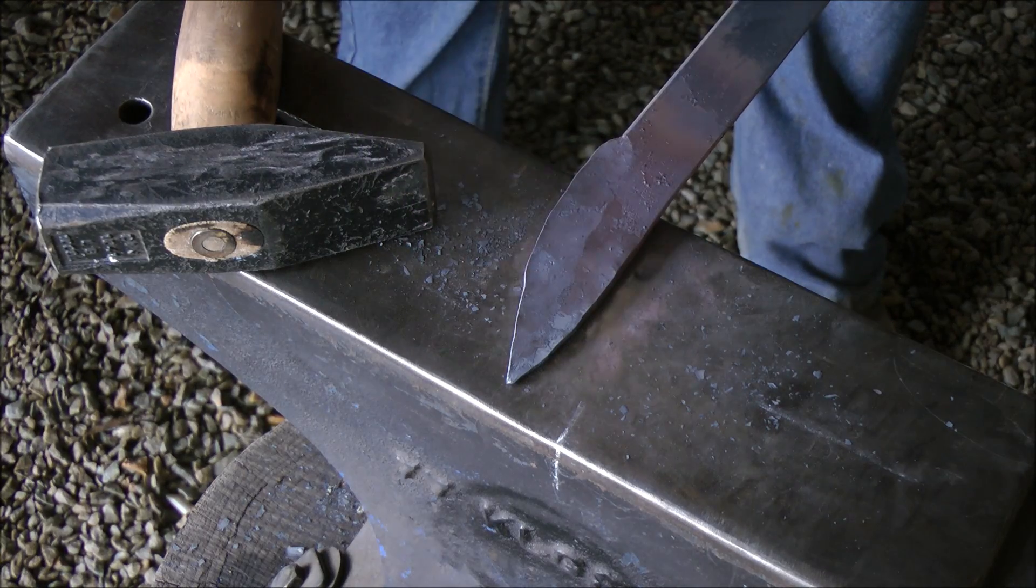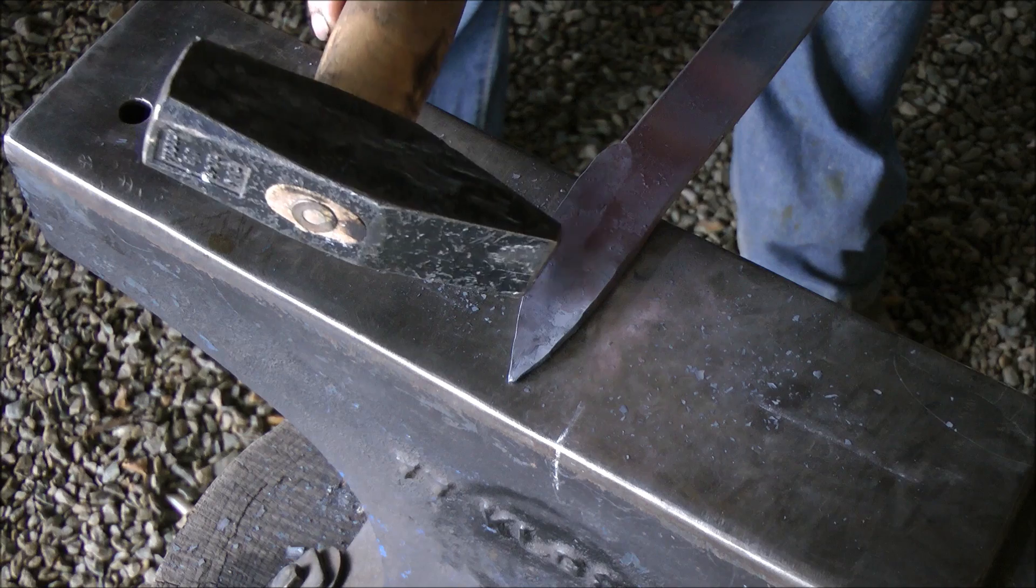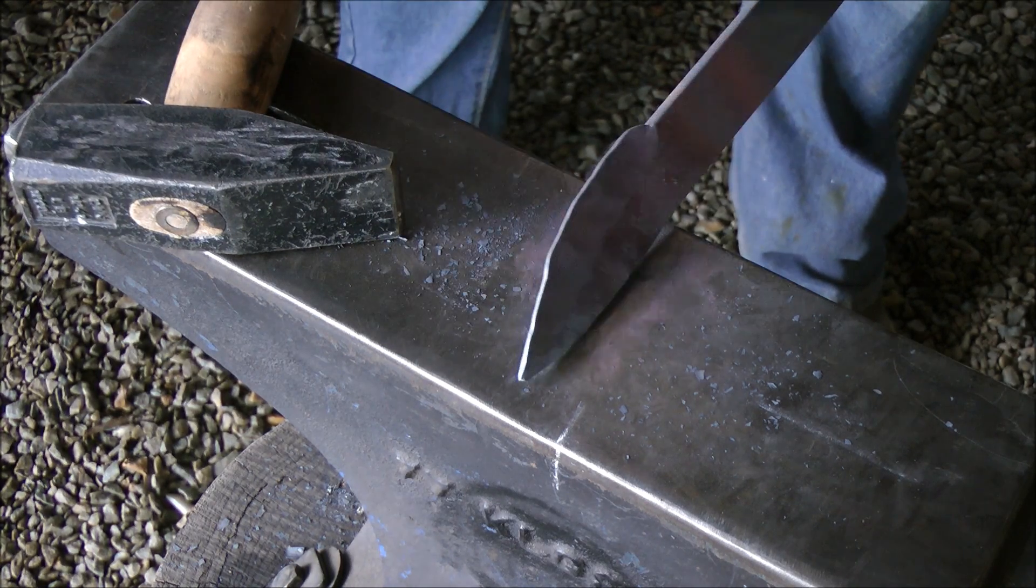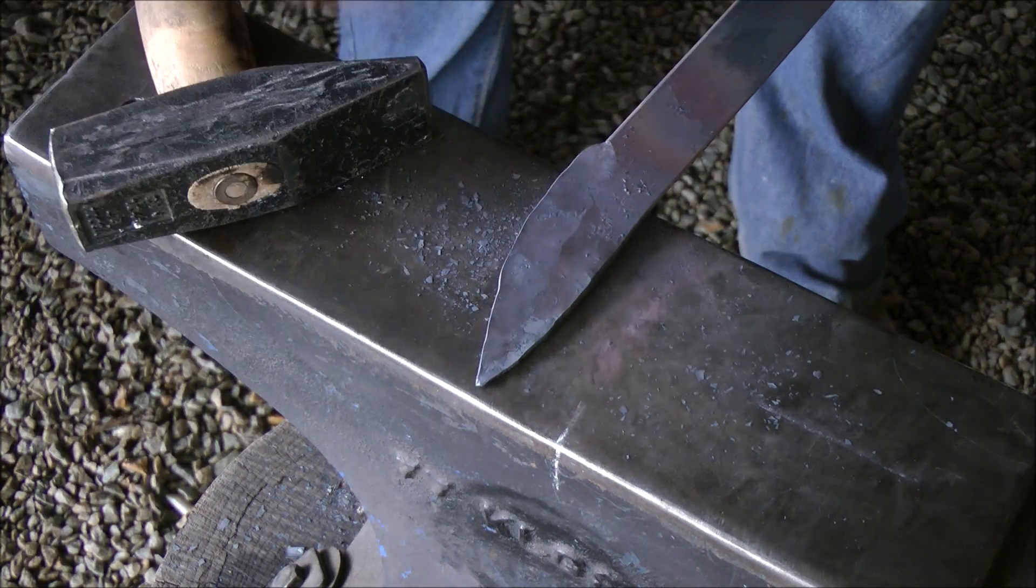And then a little dip right there. If I want to draw the metal out, I'm going to hit it right on that little dip, and it'll draw out the metal. But my preferred method, hammering that edge in, and then drawing it out again.